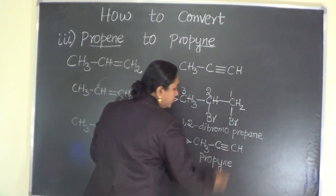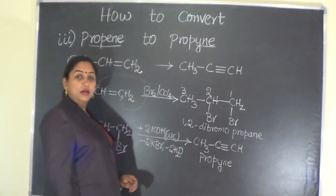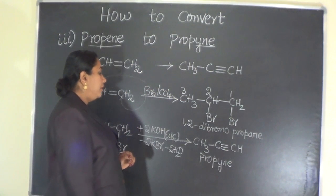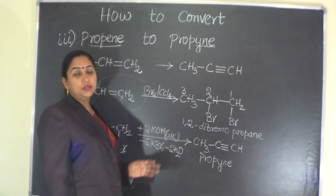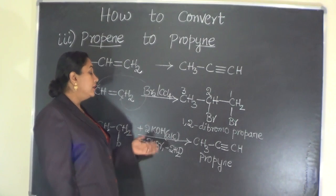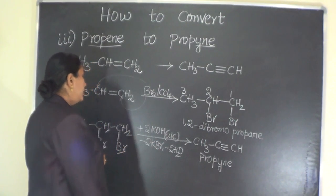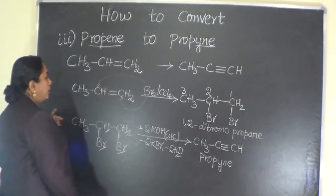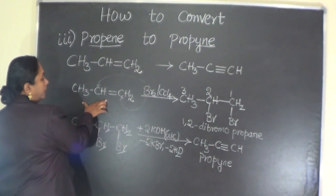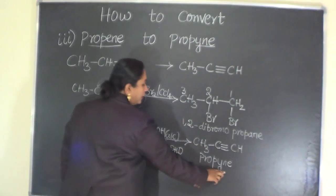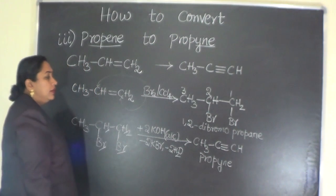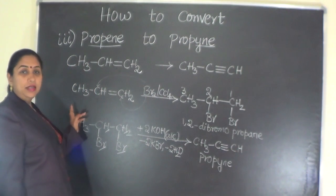Since the locant is 1, whether you mention it or not, it does not carry any importance. Either you can call it 1-propyne or simply propyne. So therefore we obtain from propene the product of our requirement, propyne. And that has taken two steps.